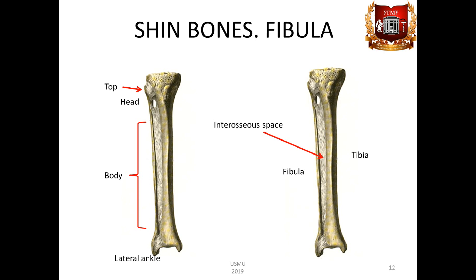The distal epiphysis of the fibula is called the lateral ankle, malleolus lateralis. The inner side contains a smooth articular surface located in the sagittal plane. There is a pit, fossa malleoli lateralis, behind the articular surface, to which the tendons of the muscles attach.